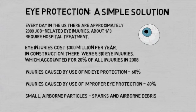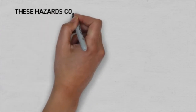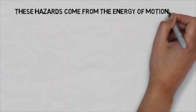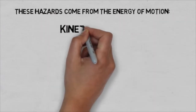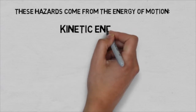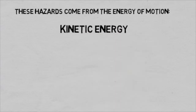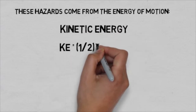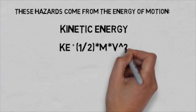These injuries are often caused by small, airborne particles, specifically sparks and other airborne construction debris, traveling at high velocity. These hazards come from the energy of motion, specifically kinetic energy. Kinetic energy is equal to one-half times the mass of an object, times its velocity squared.